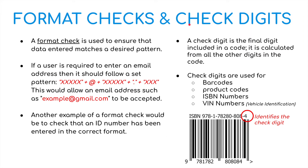A format check is used to ensure that the data entered matches the desired pattern. Here you can see an email address, which has the format: the first part (the name), the at sign, then the domain such as hotmail or gmail, then the dot, and then the extension such as .co.uk, .com, .it, or .au. This would be an example of a format check for an email address with a Gmail account. Another example would be to check that an ID number entered is in the correct format — the right amount of letters and numbers in the correct positions.